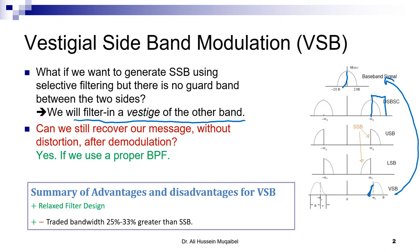To summarize: what is the advantage of going to vestigial sideband? The advantage is relaxed filtering — even if there is no guard band, we can use a filter that is far from being ideal. Comparing with double sideband, it has the advantage of using less frequency bandwidth. Comparing with single sideband, it's a disadvantage because it uses more bandwidth — we trade off the bandwidth, using an extra 25 to 33 percent greater than single sideband.